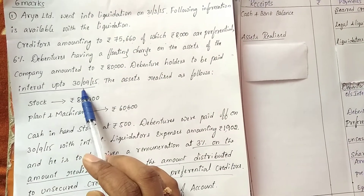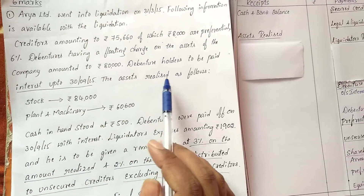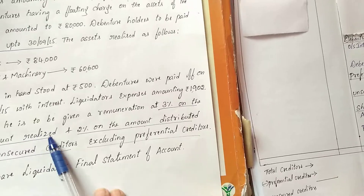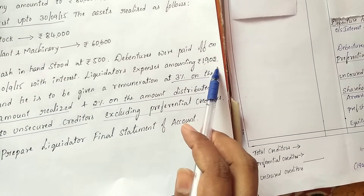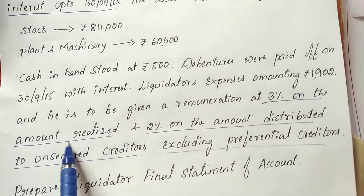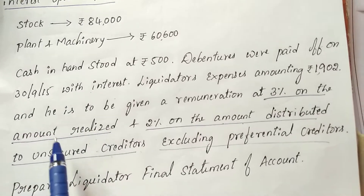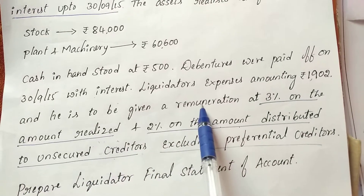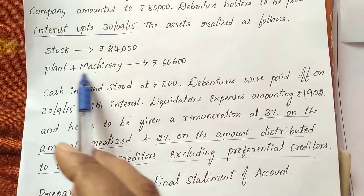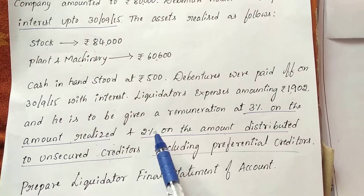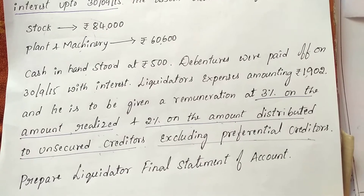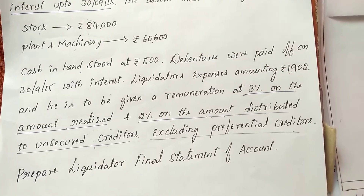The assets realized are as follows: stock and plant and machinery. Cash in hand is also given. The debentures were paid off. Liquidation expenses amounting to rupees 1,902 are given, and remuneration is 3% on the amount realized — note that amount realized means asset realized only, not including cash. Also, 2% on the amount distributed to unsecured creditors excluding preferential creditors. Prepare the liquidator's final statement of accounts.